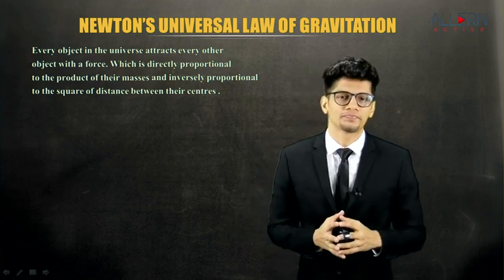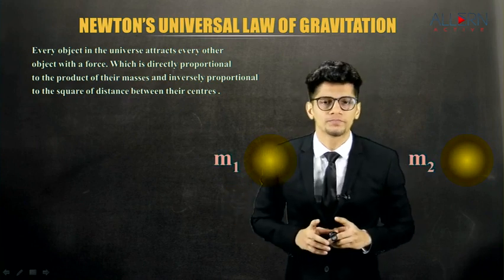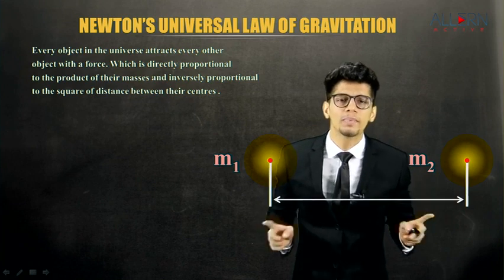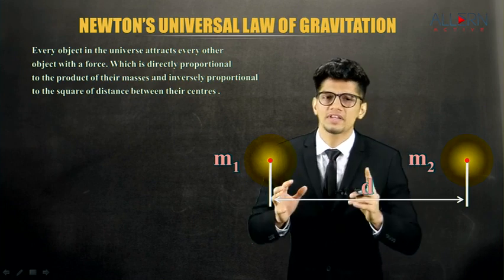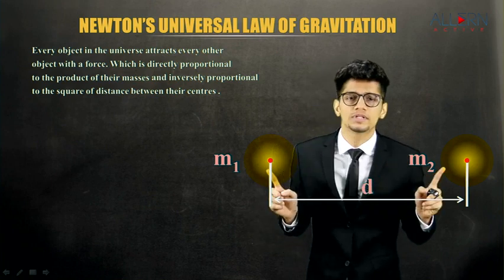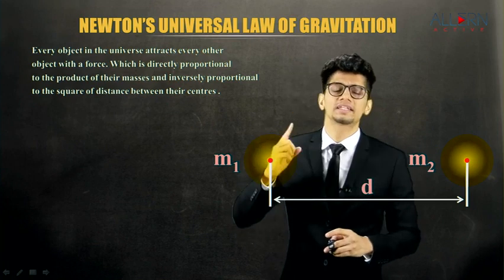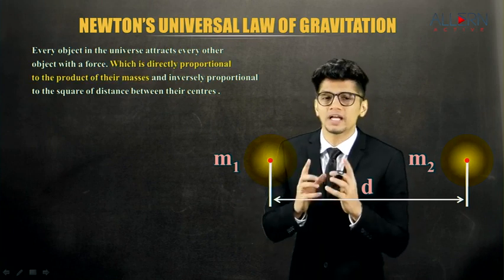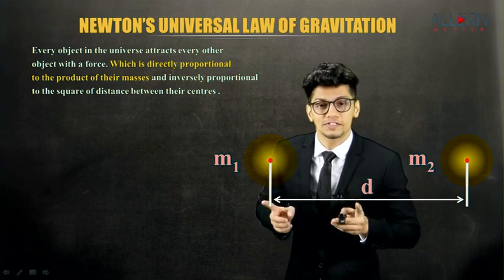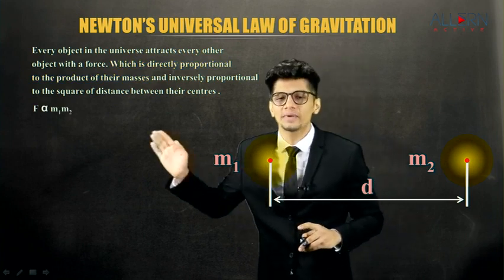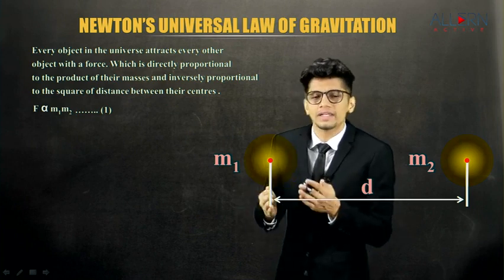To understand the statement fully, we consider two objects of masses m1 and m2, with the distance between their centers denoted by small letter d or r as in the textbook. These two objects attract each other with a force denoted by capital F. The force is directly proportional to the product of their masses — m1 into m2. So we write: F alpha m1 into m2, where alpha means directly proportional.